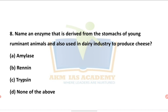Based on this explanation, among amylase, renin, and trypsin, the answer for the question is renin — the enzyme derived from the stomach of young ruminant animals used in the dairy industry.